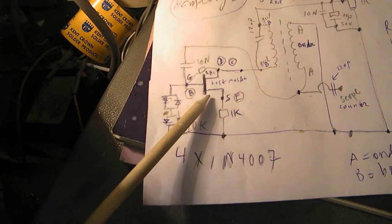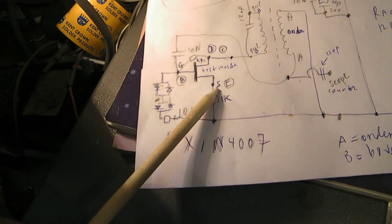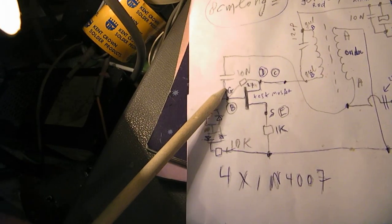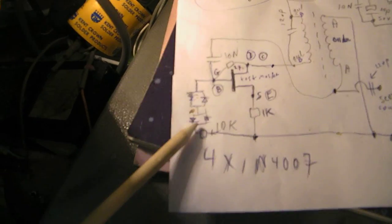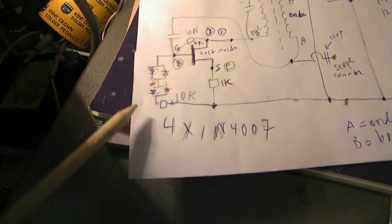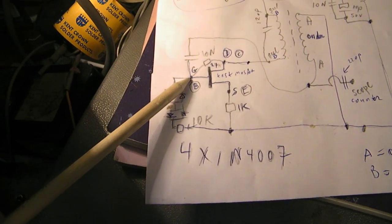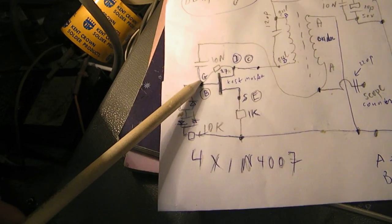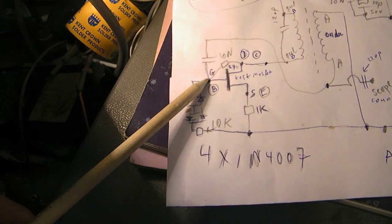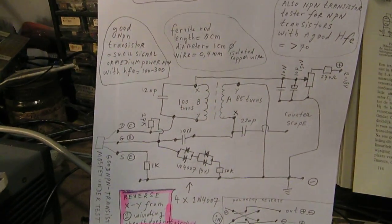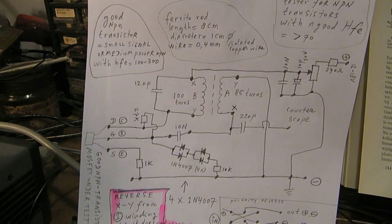The emitter goes to ground, or the source goes to ground. Here we have the base or the grid. The diodes here have the only function to limit the voltage to the grid. Too high voltage can damage the grid.